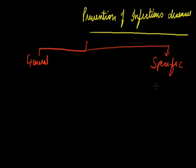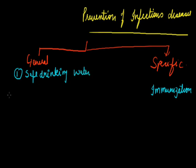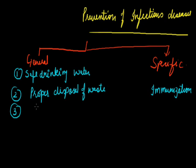Under specific preventing measure, the term that comes is immunization. And under general preventive measures, the various points are included. First is safe drinking water. The second preventive measure is proper disposal of waste. The third general preventive measure is control of vectors. Fourth is having a strong immune system.